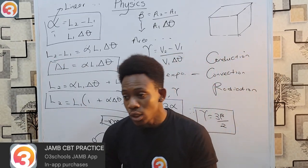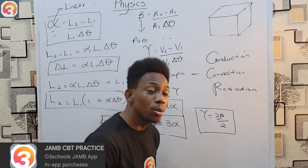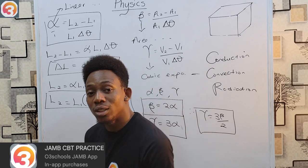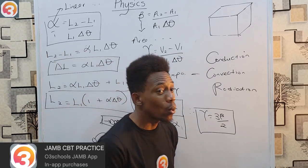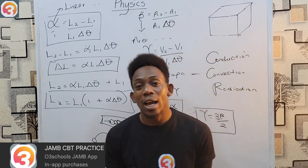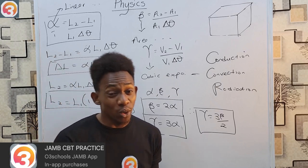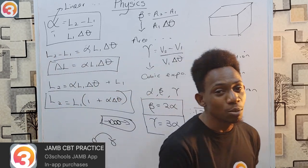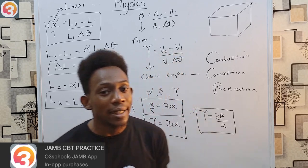Regarding radiation: black color absorbs heat better than white. The darker the color, the easier it absorbs heat. This is why it is preferable to wear a white shirt on a hot day — a black shirt absorbs more heat, making you sweat more.